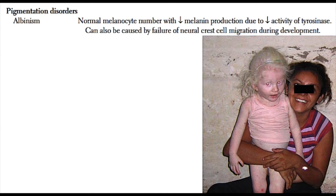In terms of disorders of pigmentation you should be familiar with for Step 1, there are really three types. The first type is albinism. Albinism is a disorder of decreased melanin production with a normal number of melanocytes. There are really two ways this can happen: the first is if the patient inherits a defect in tyrosinase.